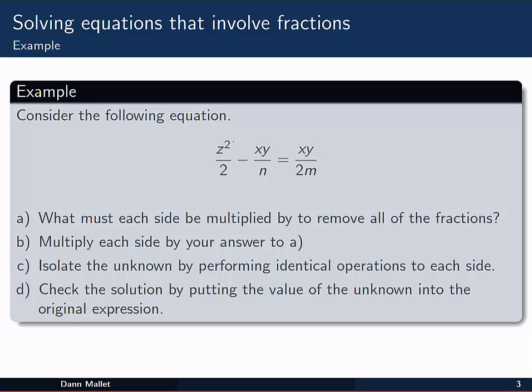We're asked in part a, what must each side be multiplied by to remove all of the fractions? We can think about this one step at a time. Looking at the first term, to remove the fraction here we could multiply by 2. That would also mean we'd have to multiply this term by 2 and this term by 2 in order to keep the balance of the equation. While applying similar thinking, to get rid of the n we'd need to multiply both sides by n, and to get rid of this 2m we'd need to multiply both sides by 2m. So all in all, we could say that for part a, the equations both sides of the equation need to be multiplied by 2nm in order to remove all of the fractions.